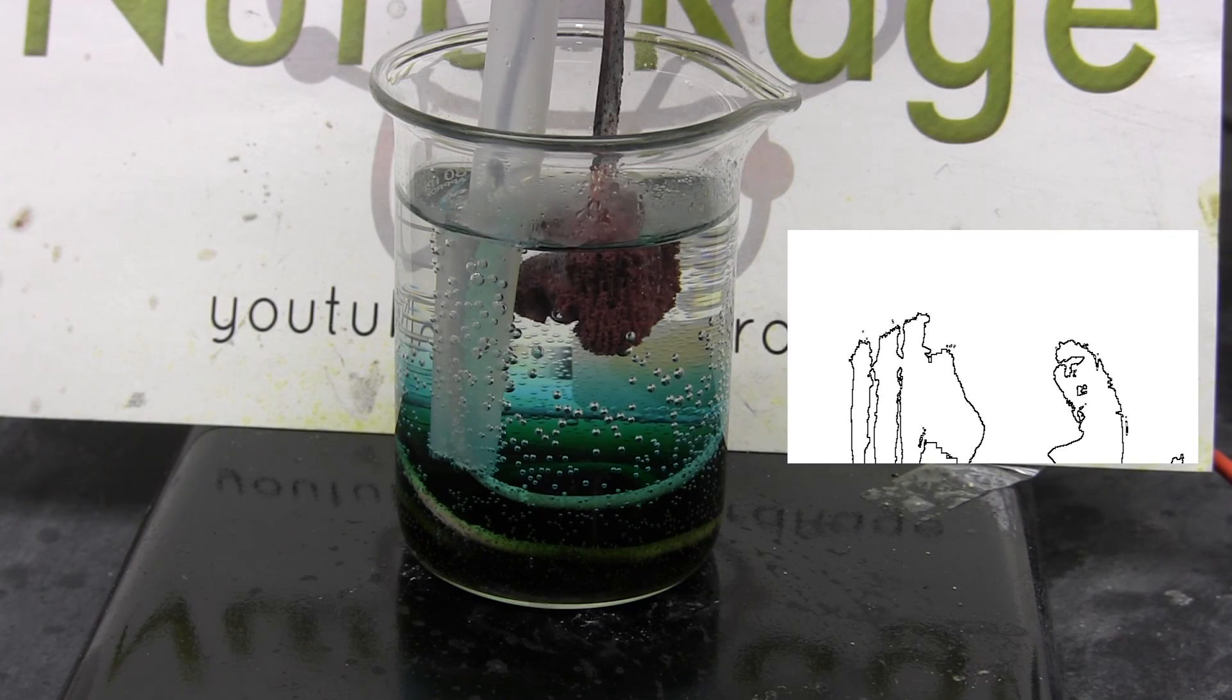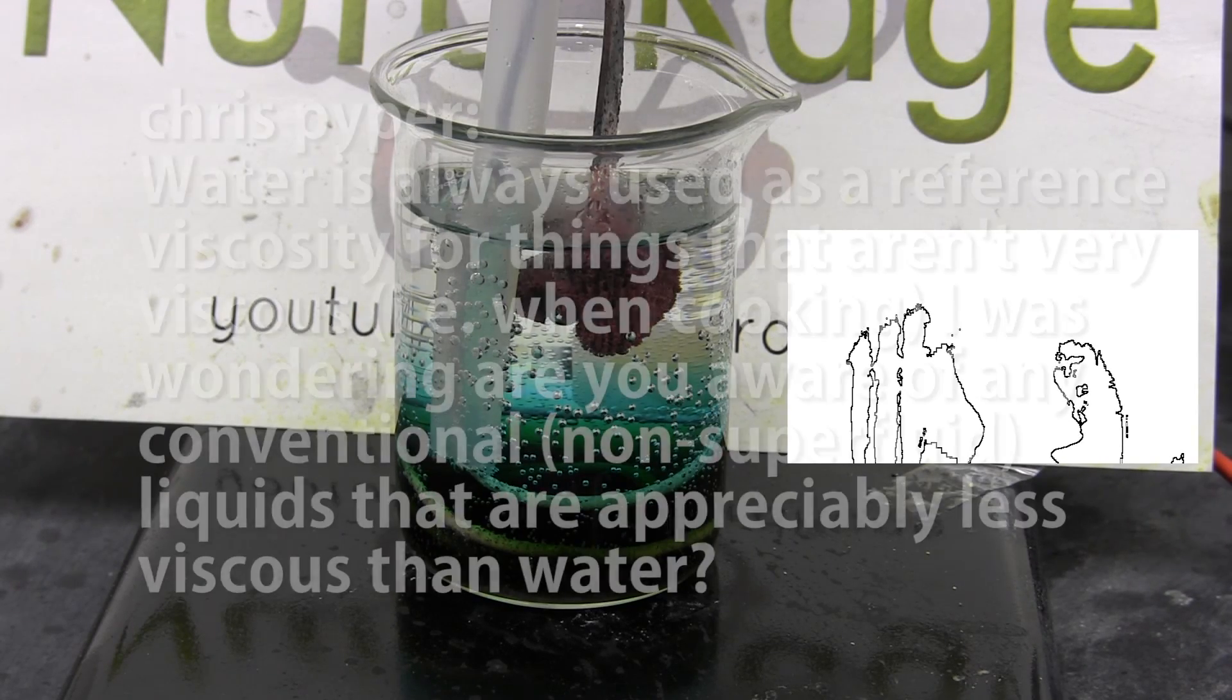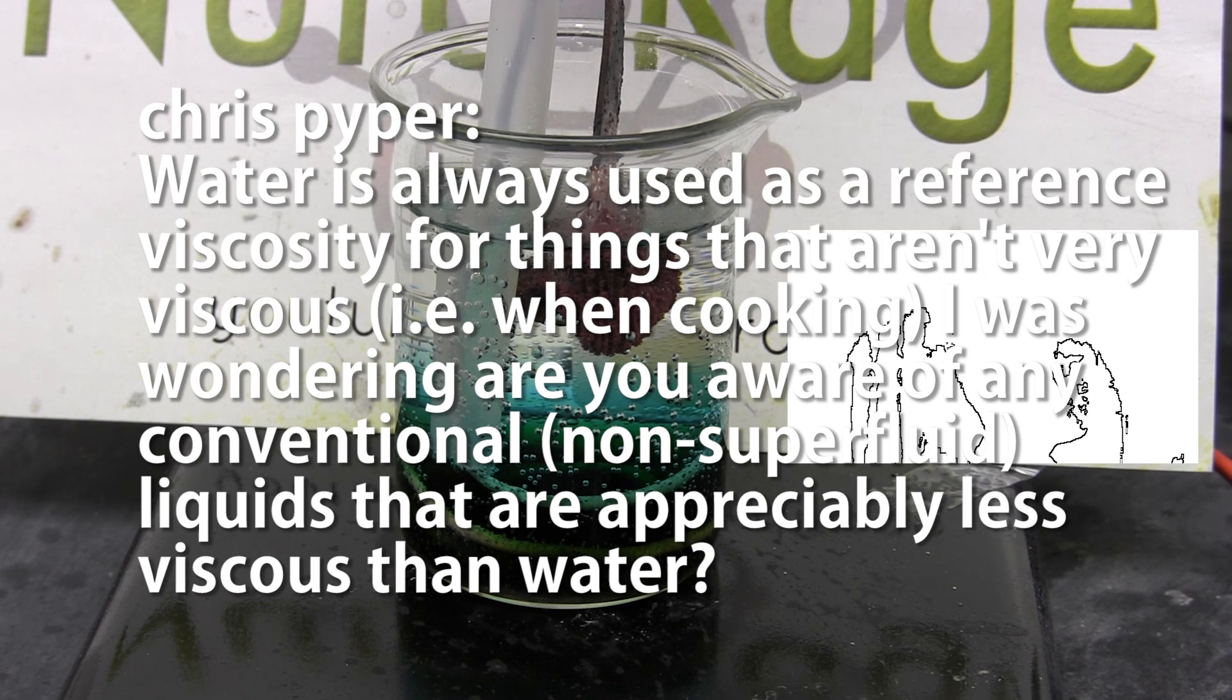Okay next question, Chris Piper asks, water is always used as a reference for viscosity and are there any substances that are appreciably less viscous than water? Yeah, a lot of organic solvents like alcohol or dichloromethane have lower viscosities.